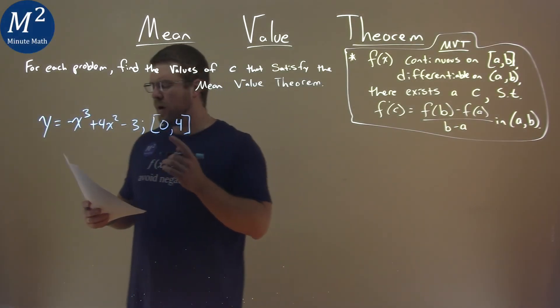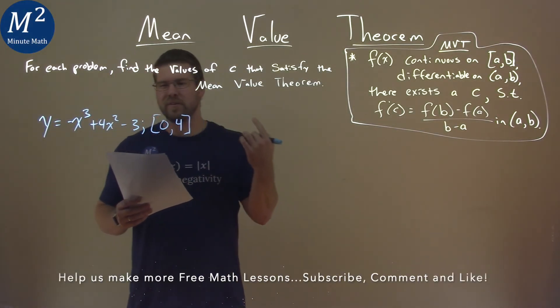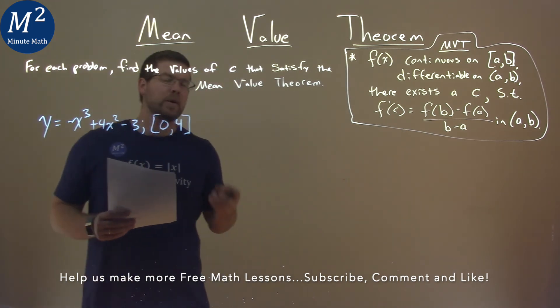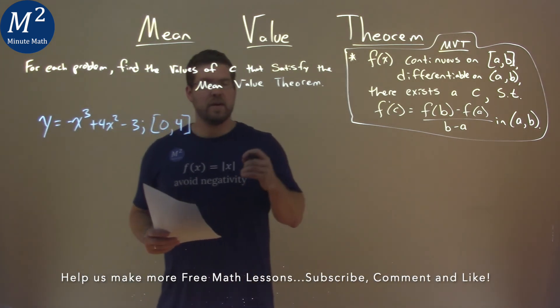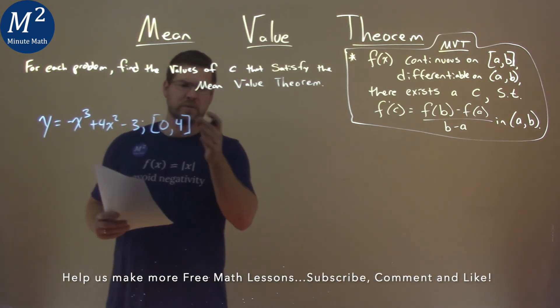We're given this problem: y = -x³ + 4x² - 3, and we need to find the values of c that satisfy the Mean Value Theorem on the interval from 0 to 4.